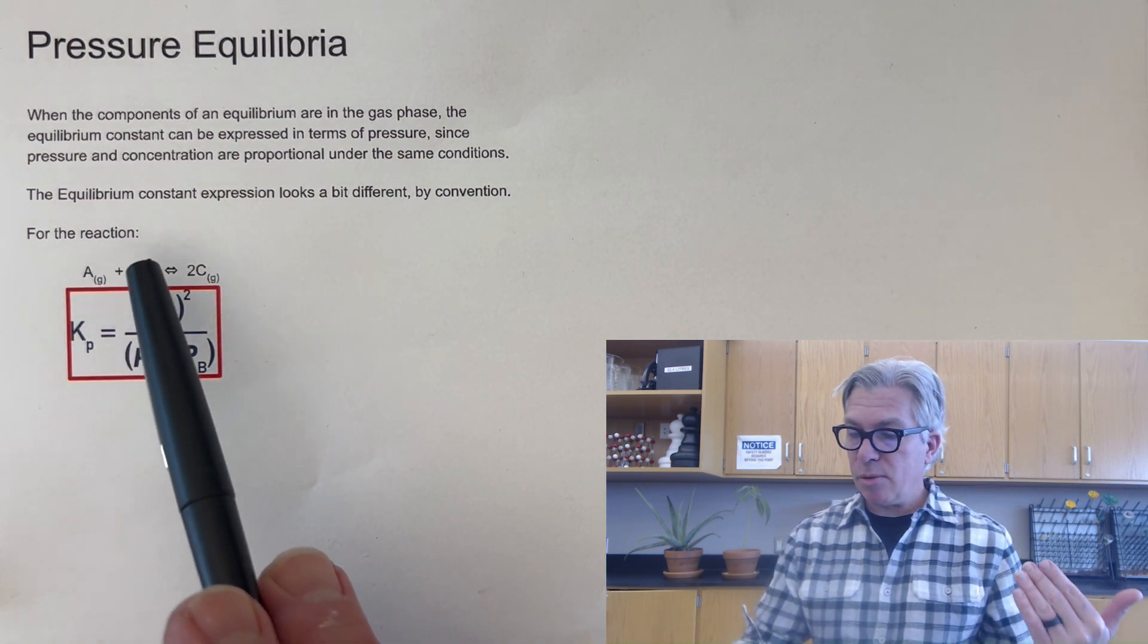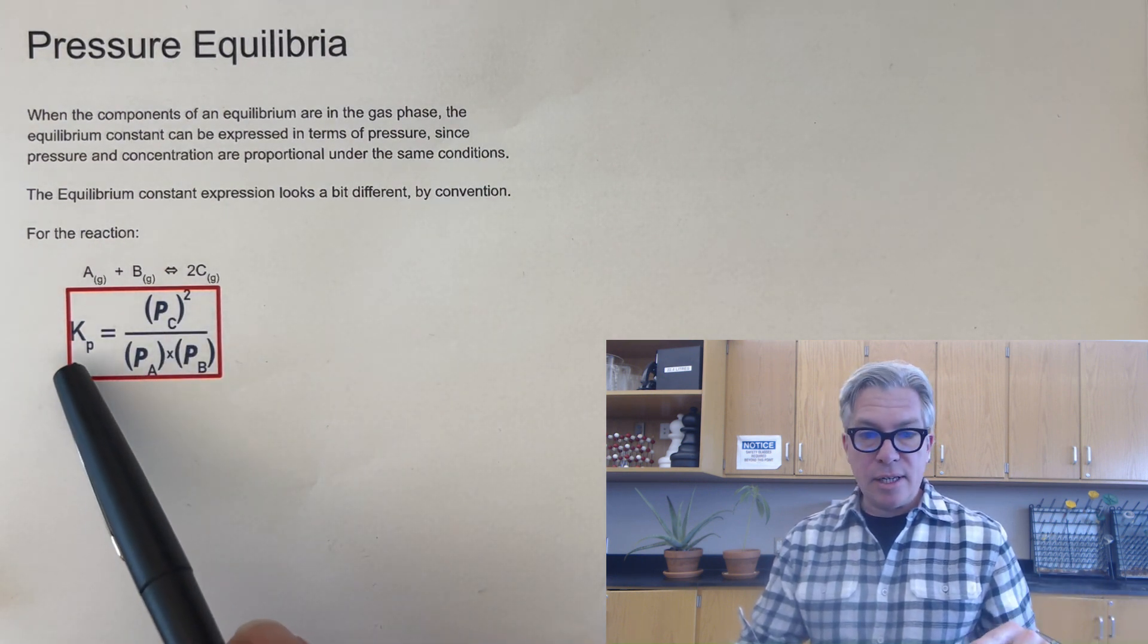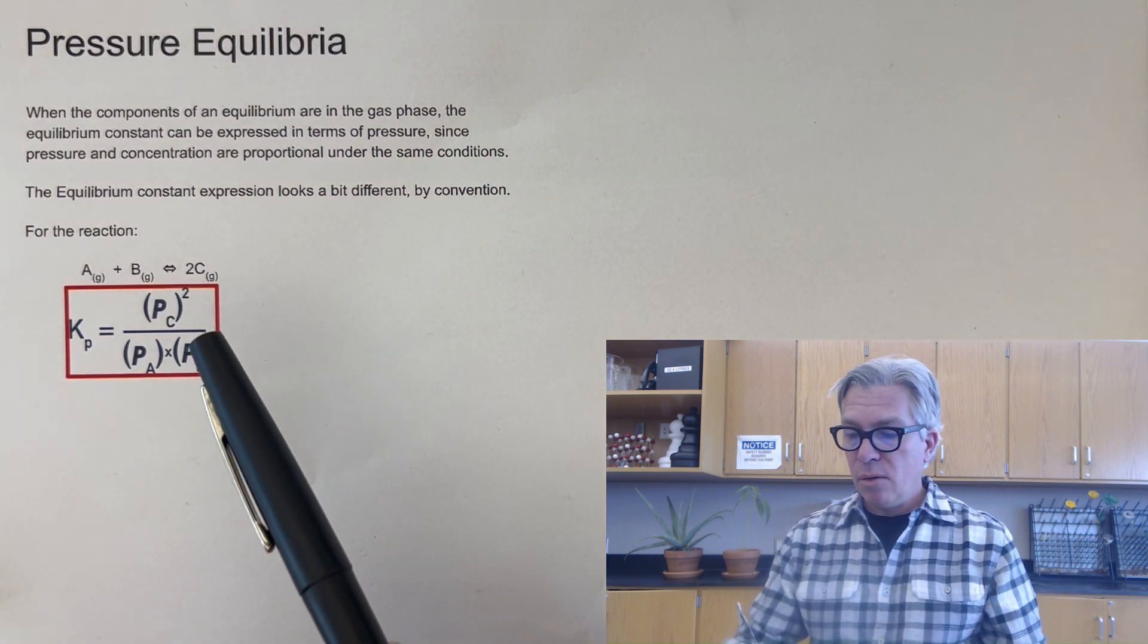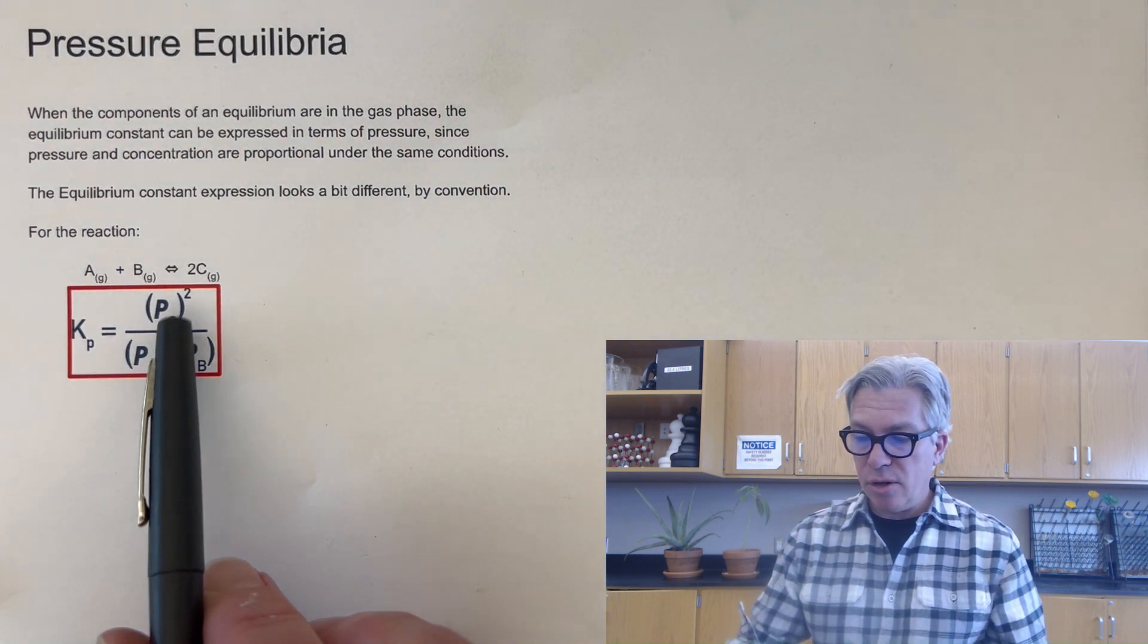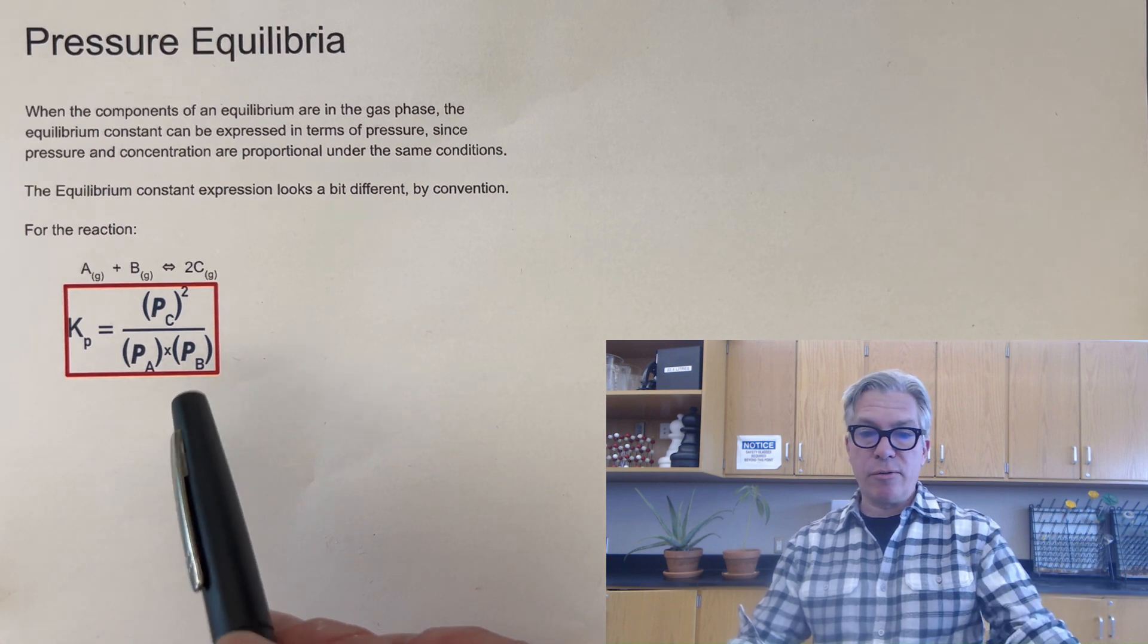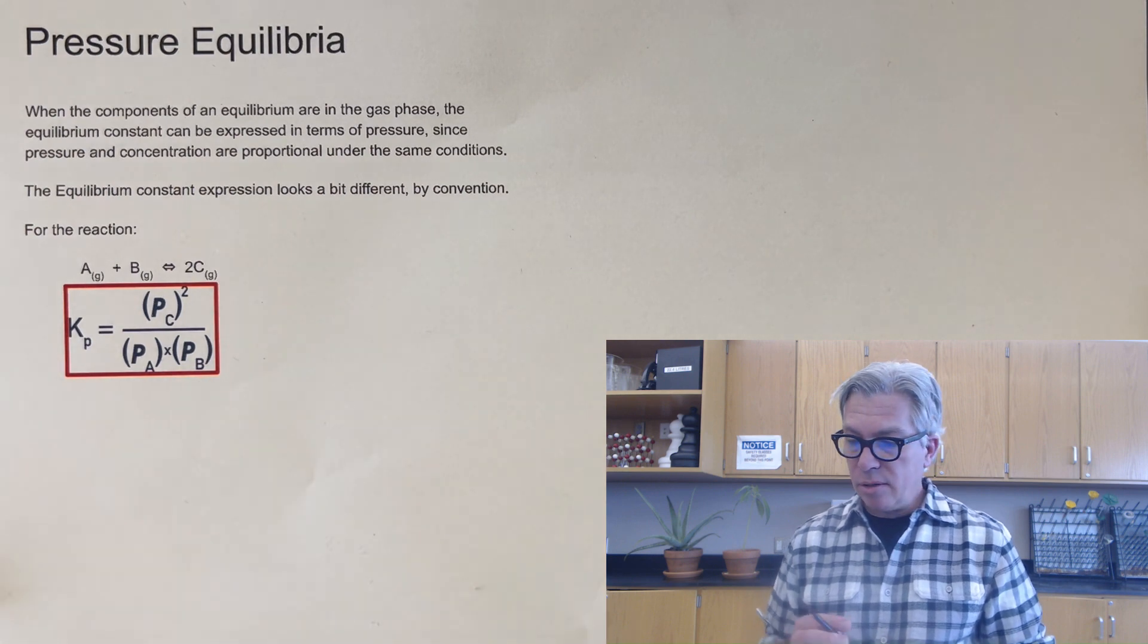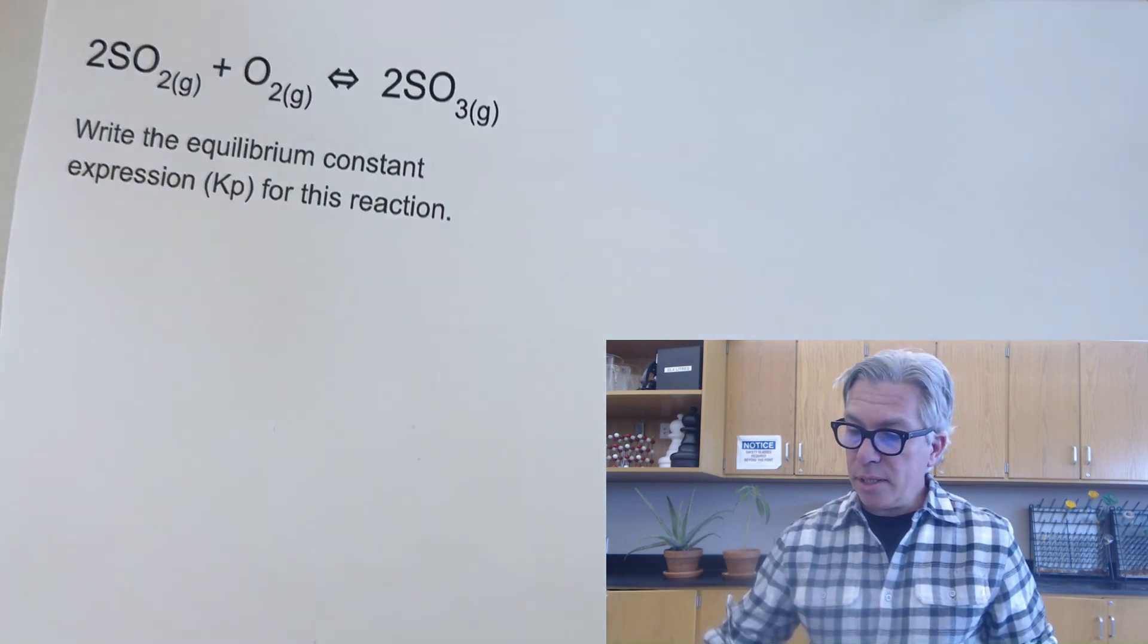And the equilibrium constant expression looks a bit different by convention for this reaction. Notice that the k is given a p subscript and instead of square brackets, which mean moles per liter or concentration, we're just using regular parentheses with a pressure, a capital P, and then the pressure of what component we're measuring at that moment. And this Kp value is now the ratio of the pressures of the products over the pressures of the reactants. So that's how your equilibrium constant expression should look. And if you're taking AP chemistry or something like that, there's usually a sample one on your equation sheet.